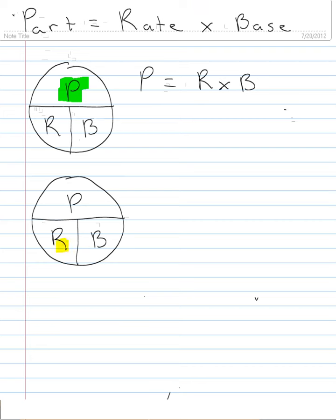And this time, if I sort of shade in the R or cover it over with your finger, you'll get the same effect. Well, what am I left with? I'm left with rate is equal to P over B.